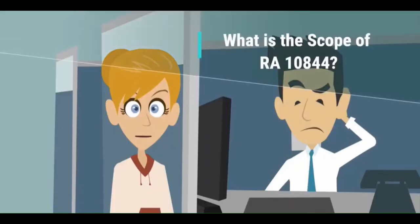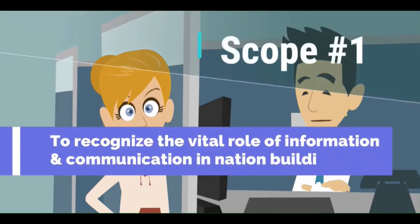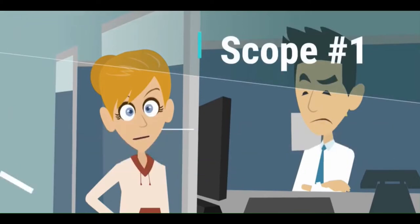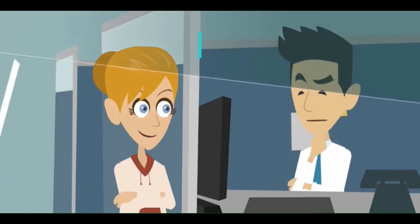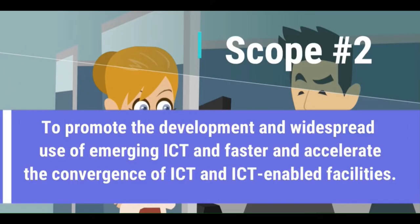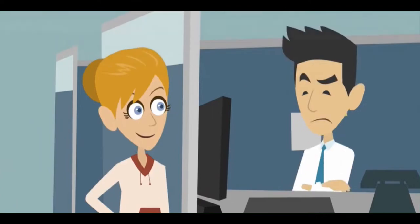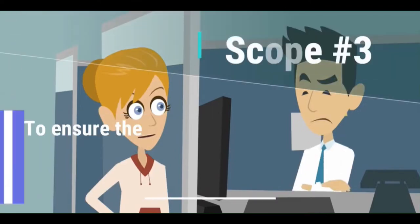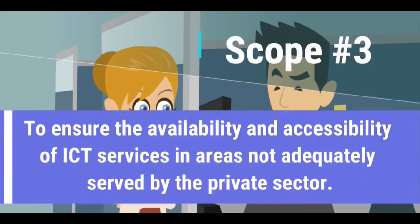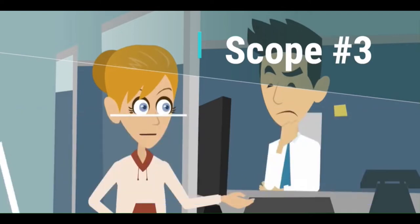The scope of RA 10844 includes: Scope 1, to recognize the vital role of information and communication in nation building; Scope 2, to promote the development and widespread use of emerging ICT and to accelerate the convergence of ICT and ICT-enabled facilities; and Scope 3, to ensure the availability and accessibility of ICT services in areas not adequately served by the private sector.